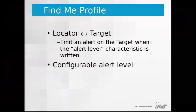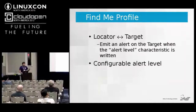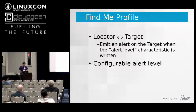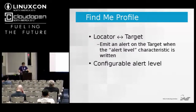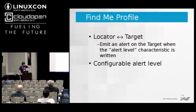The Find Me profile is similar to proximity but triggers alerts based on user interaction rather than distance. It also uses an Alert Level characteristic; when one side writes a value to it, an alert is emitted on the other side. This can be used to locate lost items — for example, sending a command from your phone to make your keys emit an alert. The alert level is also configurable.